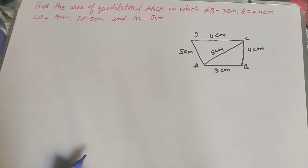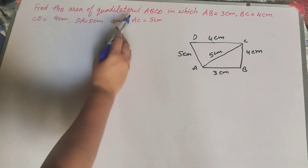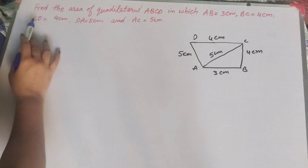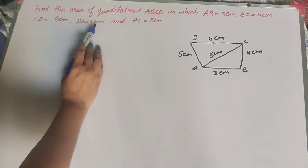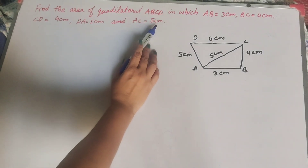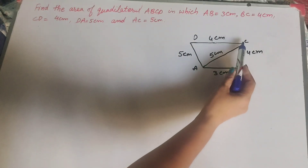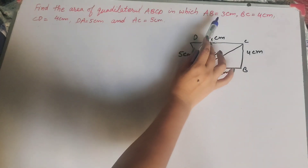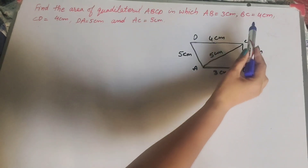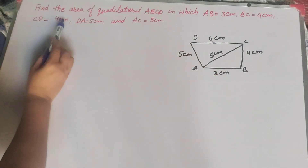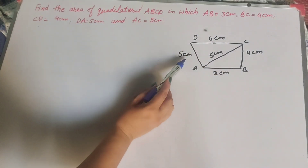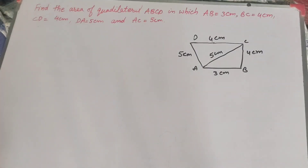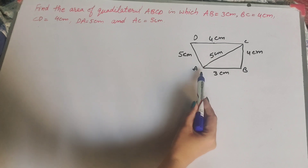Hello friends, welcome to my channel. In this video we find the area of quadrilateral ABCD in which AB equals 3 cm, BC equals 4 cm, CD equals 4 cm, DA equals 5 cm, and diagonal AC equals 5 cm. These measurements are given, so I draw this quadrilateral.